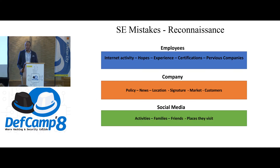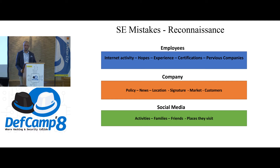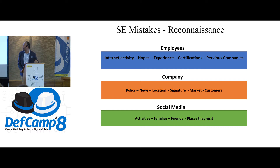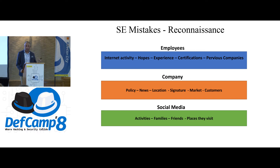When you start a social engineering project, a client says they want to test their employees. You begin reconnaissance: confirming employees' internet activities, experience, previous companies, and doing reconnaissance on the company itself — news, location, market, customers, and social media including activity, family, friends, and places they've been. Social media leaks all this information.